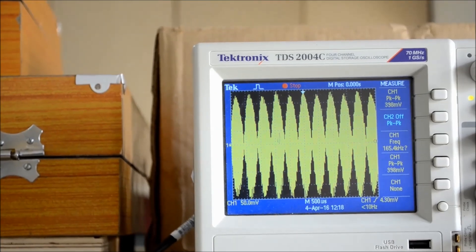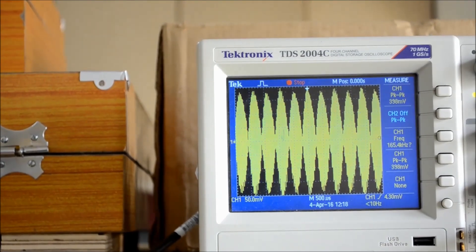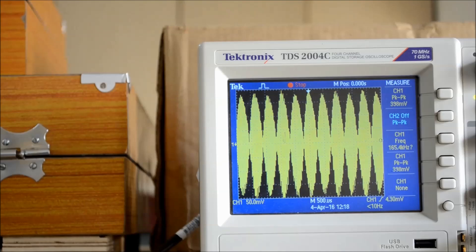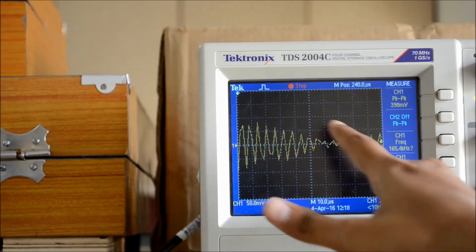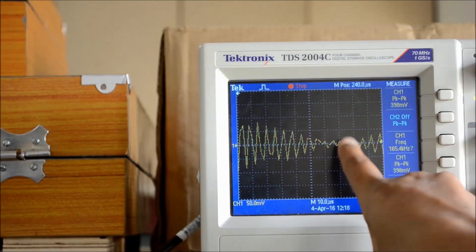There is a phase shift at zero crossing of the modulating signal. To observe that phase shift, we will change the scale. 180-degree phase shift at zero crossing of the modulating signal.